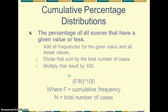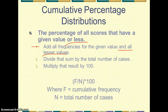What if we wanted to do a cumulative percentage distribution? That would simply be the percentage of all the scores that have a given value or less. Simply add all the frequencies for the given value and all of the lesser values, divide that sum by the total number of cases, and multiply by 100. We use a capital F to represent cumulative frequency rather than lowercase f for simple frequency.